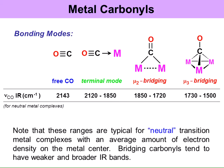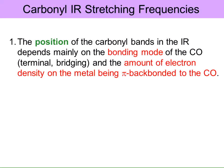Weaker meaning less intense. The position of the carbonyl bands in the IR depends mainly on the bonding mode of the CO — whether it's terminal or bridging — and the amount of electron density on the metal being pi back-bonded to the CO. The bonding mode determines how the CO is interacting with the metals, and the amount of electron density being donated into the anti-bonding orbital determines what wave number the CO stretching frequency appears at.